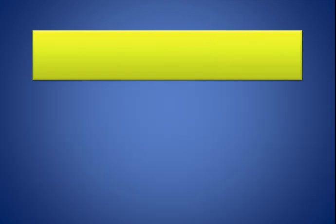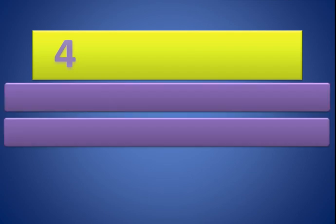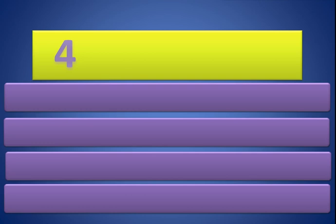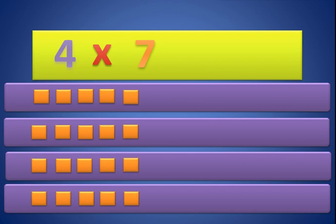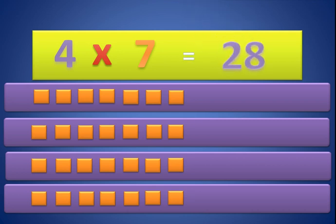Now 4 times 7. We need 4 groups — 1, 2, 3, and 4. We need 7 in each group — 1, 2, 3, 4, 5, 6, and 7. So 4 times 7 equals 28.